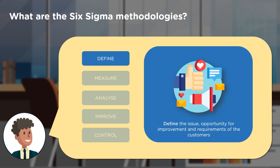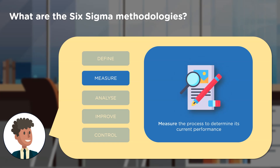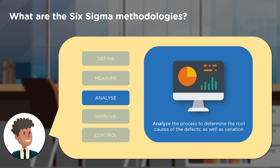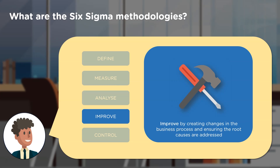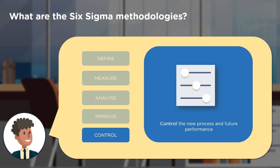Let's have a look at the DMAIC process. In the Define phase, you define the problem customers are facing, find where you can improve, and understand what customers require. In the Measure phase, you identify how well the process is doing in its current unaltered state. In the Analyze phase, you process the data from the Measure phase and determine the cause of the delay or variation. In the Improve phase, you make small changes to the business process to address the identified problem. Finally, in the Control phase, you control the new process so it doesn't go wrong and use the same knowledge for future processes.